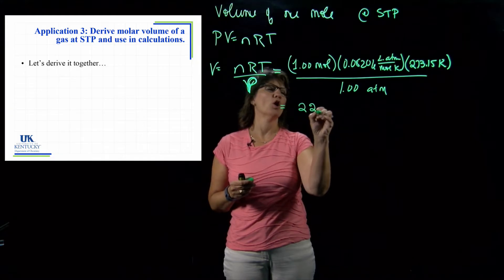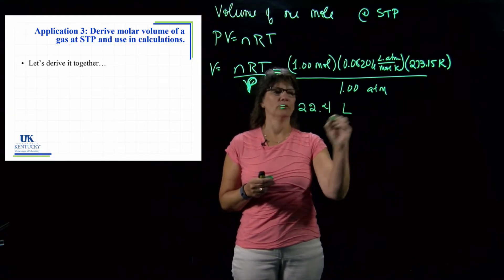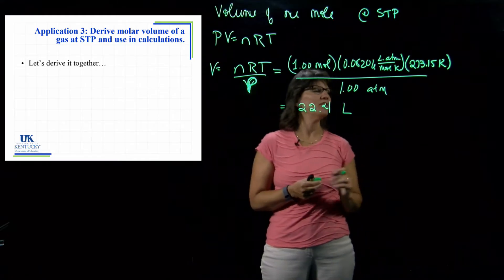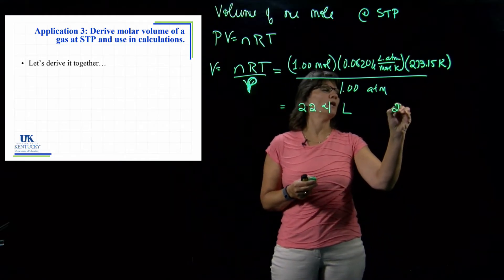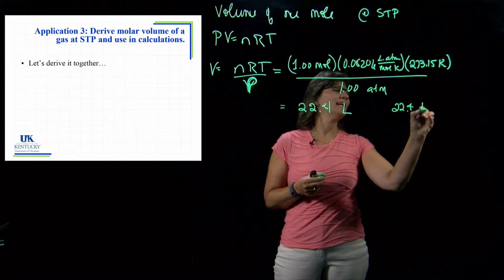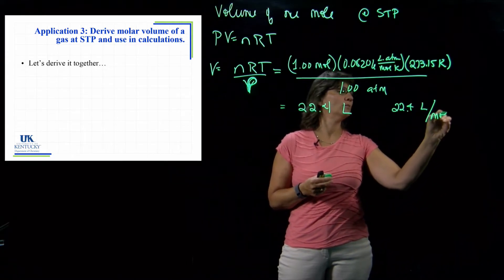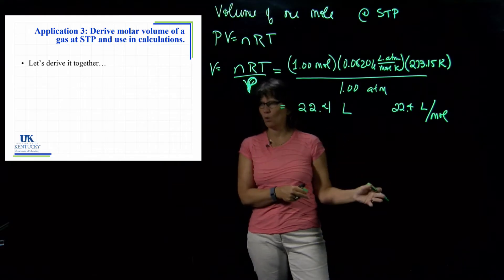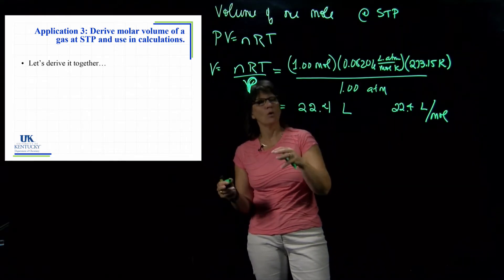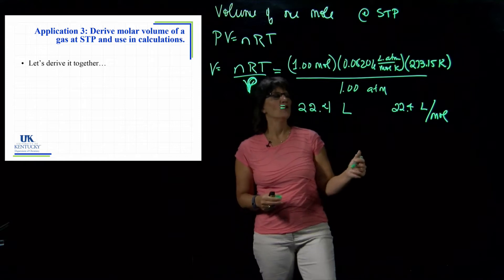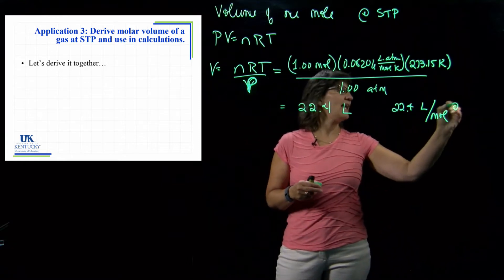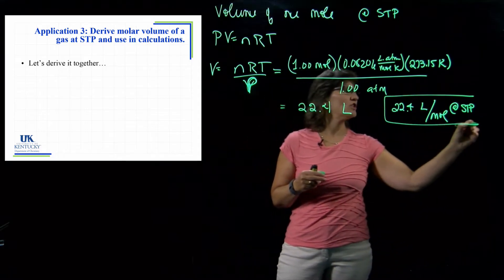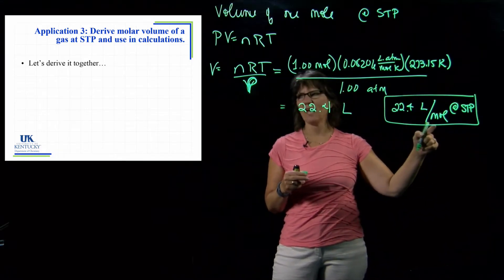The molar volume is 22.4 liters. Another way that we can say this is 22.4 liters per mole. Just like molar mass is how many grams are in a mole, molar volume is how many liters are in a mole. So what this becomes, if it's at STP, is a handy conversion factor between volume of a gas and moles of a gas.